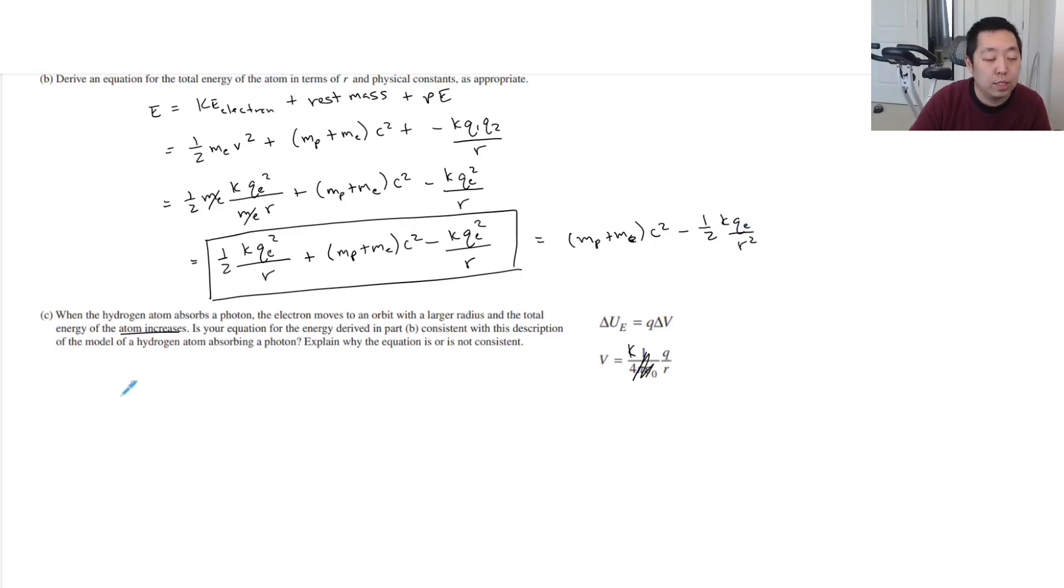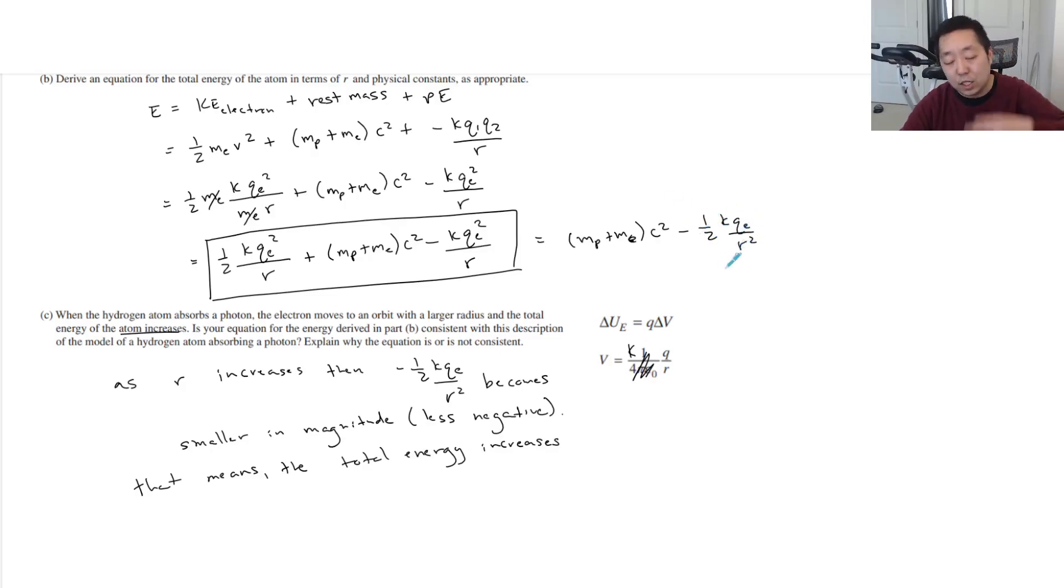So when R increases, as R increases, then the negative one-half K QE over R squared becomes smaller in magnitude. Or we would say less negative. Right? That means the total energy is larger. The total energy increases. So because of this negative sign, when I make this thing smaller, it's less negative. It goes from like negative 10 to negative 5, right? And that's an increase. And so, yes. That is consistent.